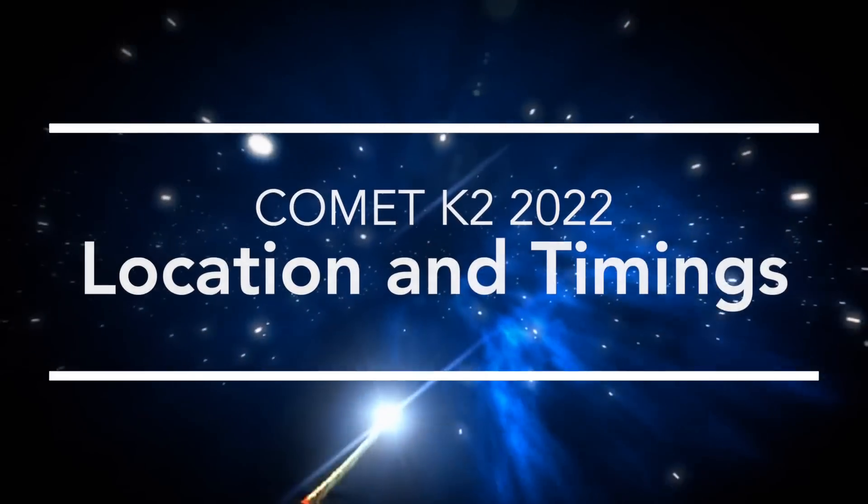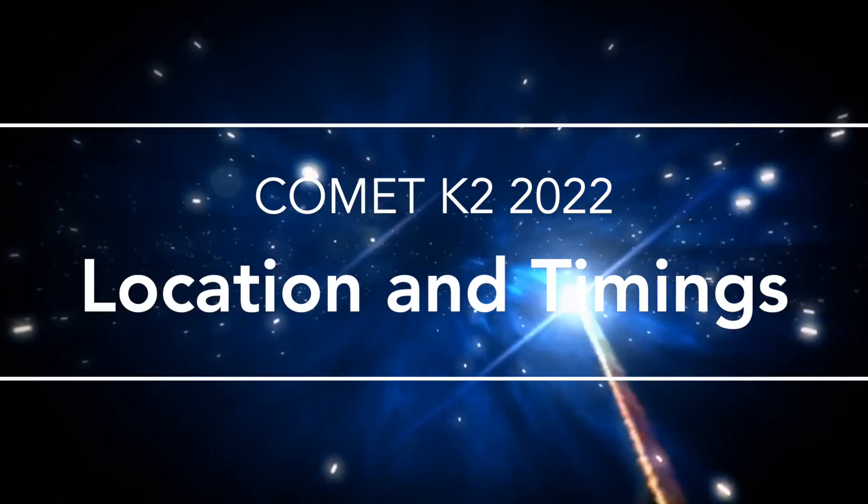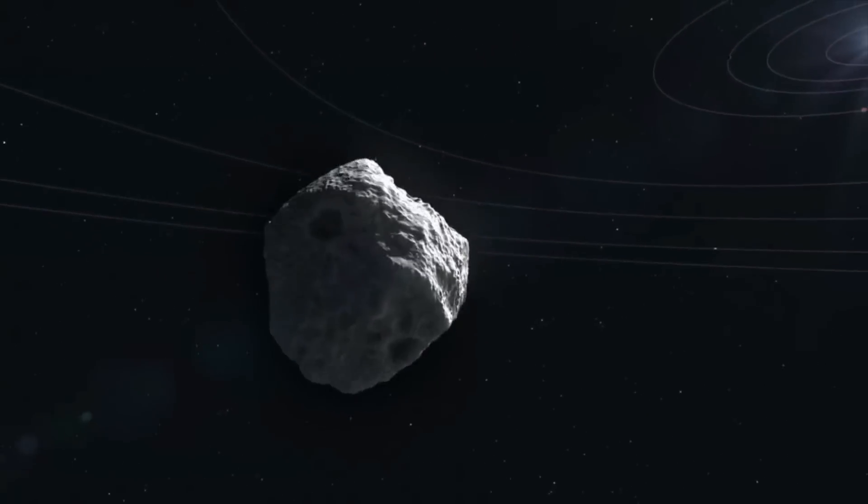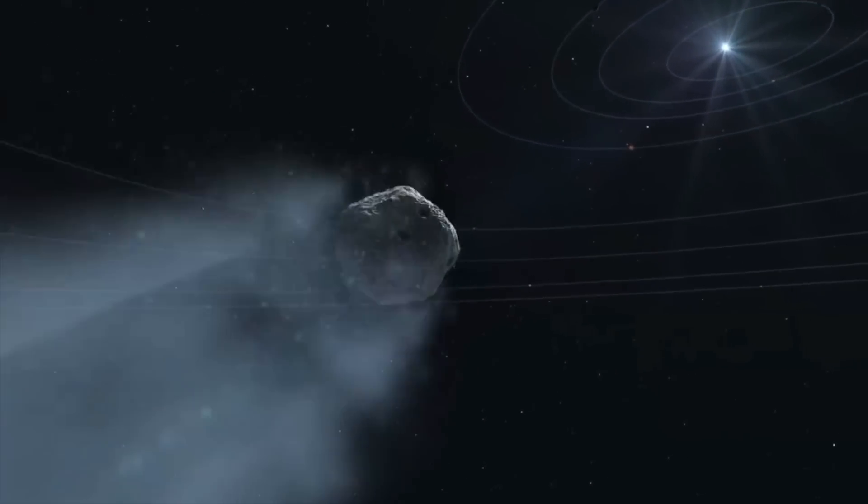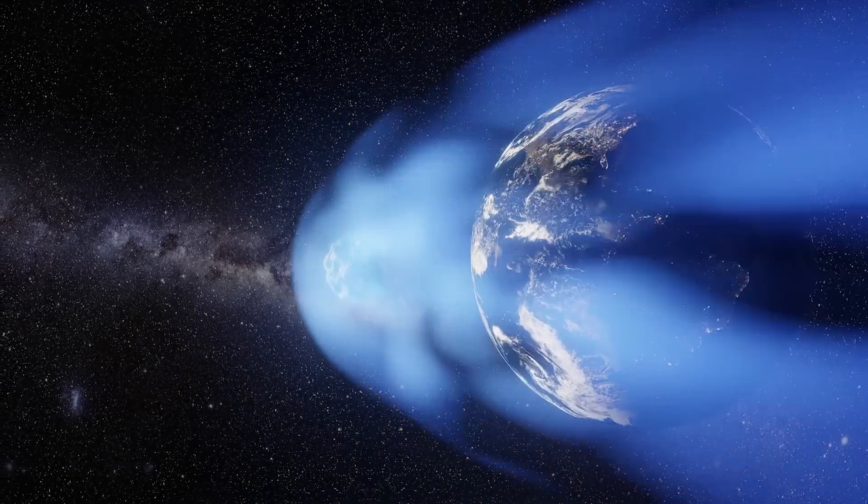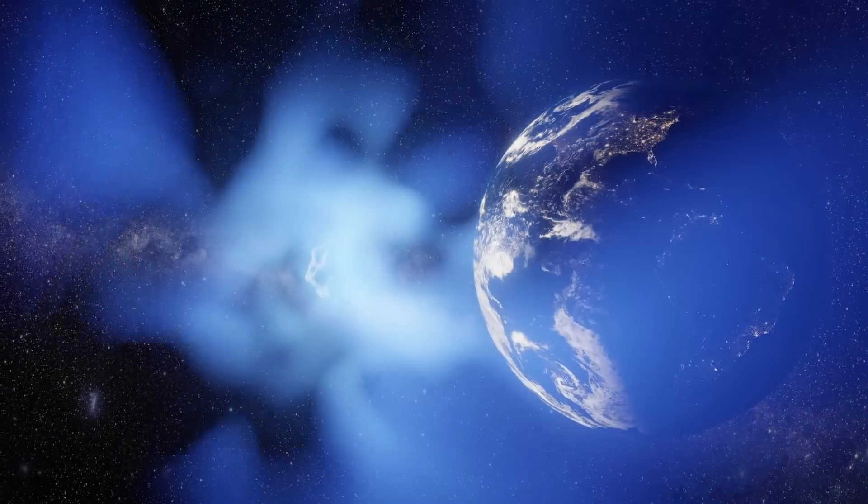Now comes the time you've all been waiting for: the best timings and locations to view the comet. The comet has been increasing in brightness as it has continued its journey toward the inner solar system. The fact that this comet does not approach the sun as closely as Hale-Bopp did in 1997, unfortunately, means that it will not be as easily observable.